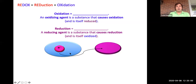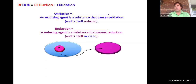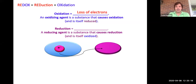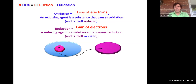A redox reaction is a combination of reduction and oxidation — these things can't take place in a vacuum. One has to occur with the other, because the electrons can't just be sent off into some mysterious ether. Oxidation is loss of electrons, and reduction is the gaining of electrons. When we combine these two processes together, we get a redox reaction.